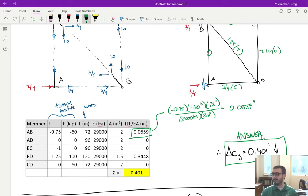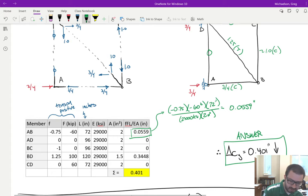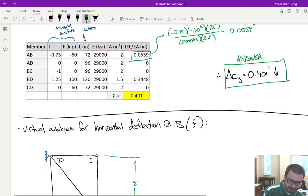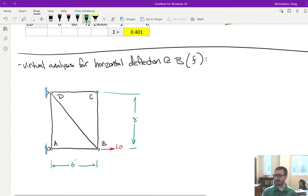Then for the horizontal deflection at joint B, we have to do another analysis. We remove all the loads and place a horizontal load at B. What I've done here is I've placed a load going to the right, and I'm doing that because I want to show you what happens when the assumption is incorrect, because it's actually not deflecting to the right, it deflects to the left.